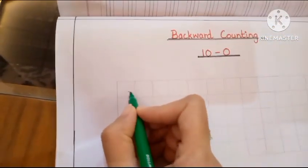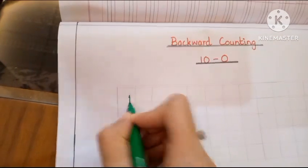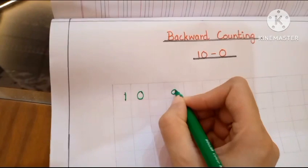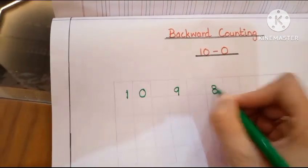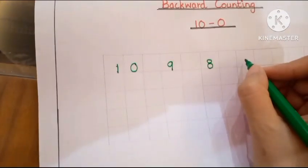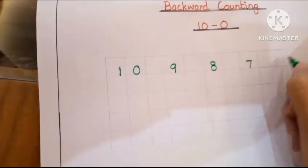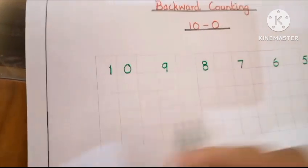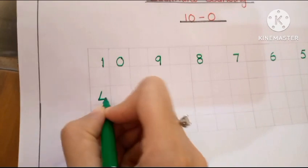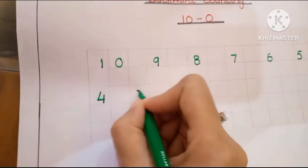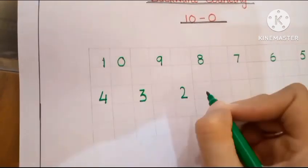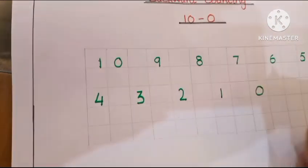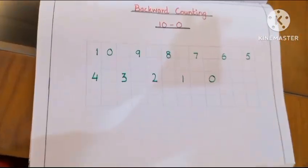Now we are going to write backward counting from 10 to 0. This is 10, 9, 8, 7, 6, 5, 4, 3, 2, 1, and 0. So this is backward counting.